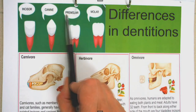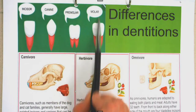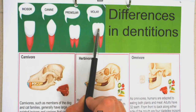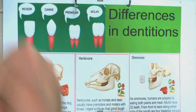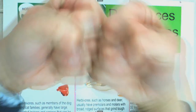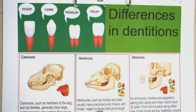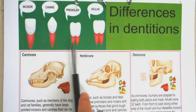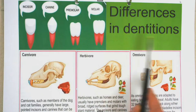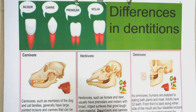Then the premolar — pre means before the molar, so we get these teeth before the molar teeth. They make me think of fists that grind — the teeth will grind and crush, making the food smaller and breaking cells so that the enzymes in your mouth can start working. The different types of teeth you have and the formula is called dentitions — dent makes you think of dentist. We have three types: carnivores eating meat, herbivores eating plants, and omnivores eating both.